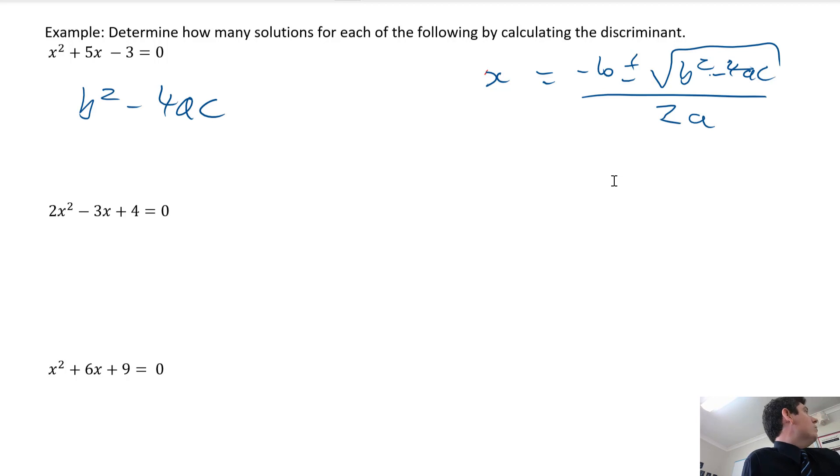For this first one, what is b equal to? What is a? What is c? Negative 3. So 25 plus 12 is? If the discriminant is greater than 0, this is greater than 0, therefore two solutions.